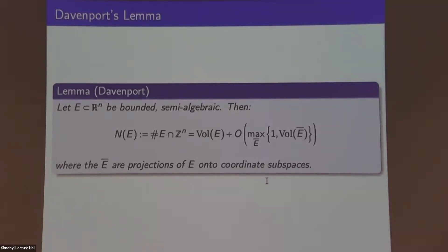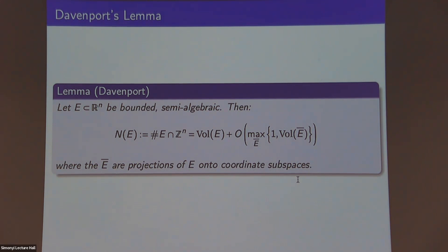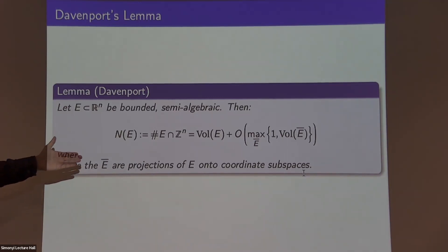You have a count and you replace that by a computation — which is nice because you can do integration when you have volumes. It's a link between something discrete and something continuous. The statement is: if you have some bounded semi-algebraic region like a sphere, the number of integral points contained in it is approximately equal to the volume, but you also have an error that's explicitly described — it's at most the max over all projections Ē of 1 and the volumes of those projections onto coordinate subspaces.